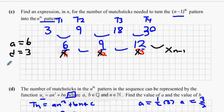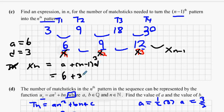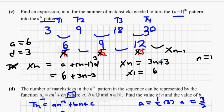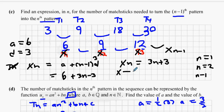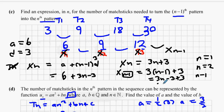It's an arithmetic sequence where a equals 6 and d equals 3. Using xn equals a plus n minus 1 times d: that's 6 plus 3(n−1) equals 3n plus 3. Checking: when n equals 1, x1 equals 6 ✓; when n equals 2, x2 equals 9 ✓. Substituting n minus 1: x(n−1) equals 3(n−1) plus 3 equals 3n minus 3 plus 3 equals 3n. The answer is 3n.